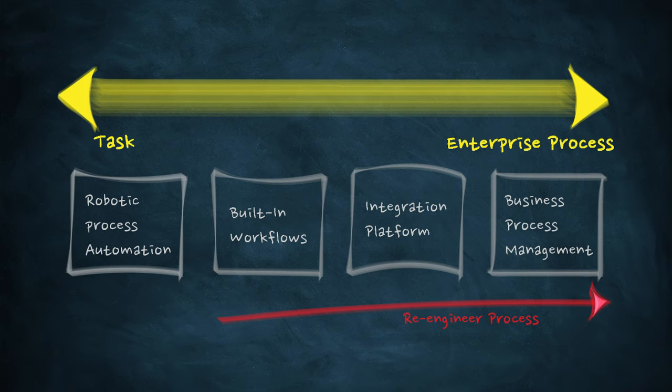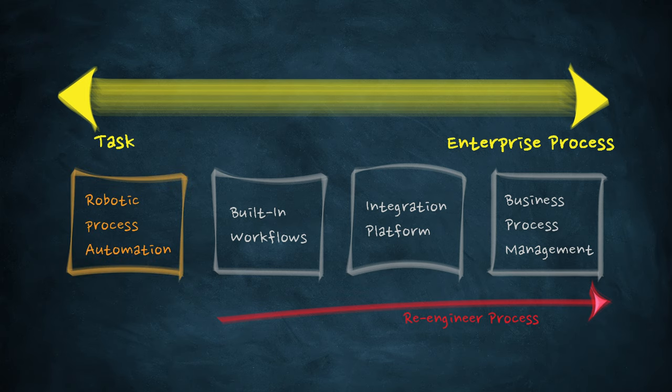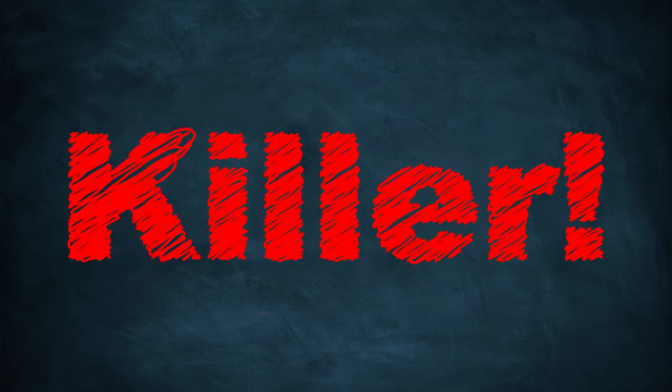Automation technologies can be divided into these four categories. This is very much a case of using the right technology to solve automation problems. But it is also worth pointing out that the further to the right you go, the more process re-engineering you have to do, thereby increasing costs and delaying the delivery of automation. That is why robotic process automation, or RPA, is being used extensively to automate self-service request fulfilments.